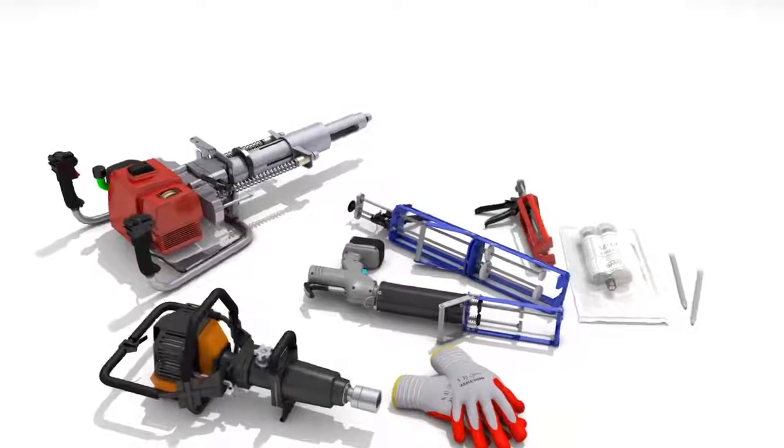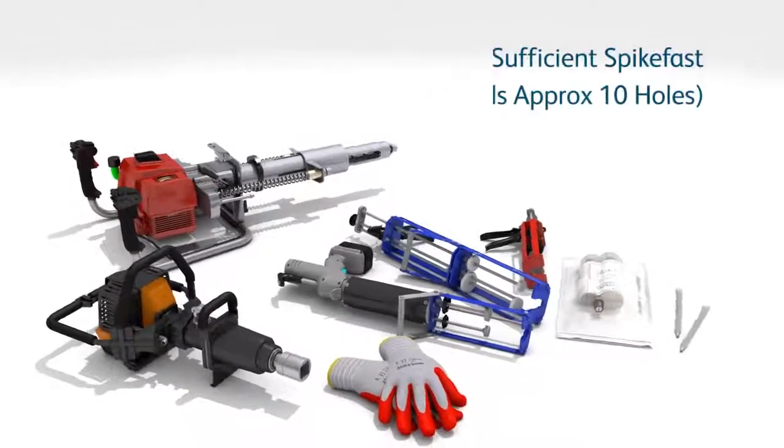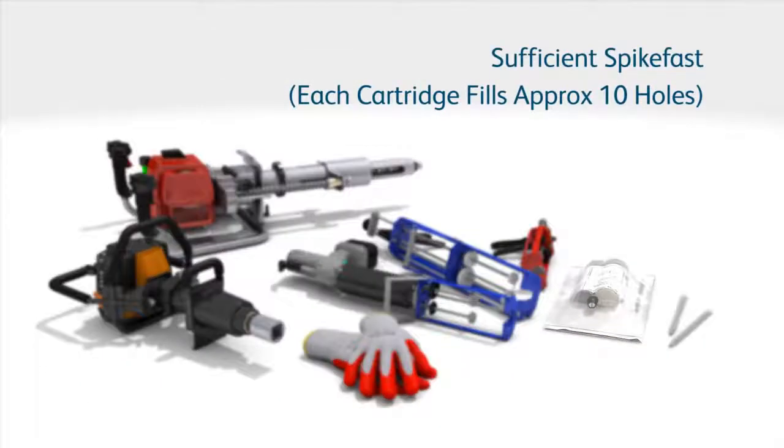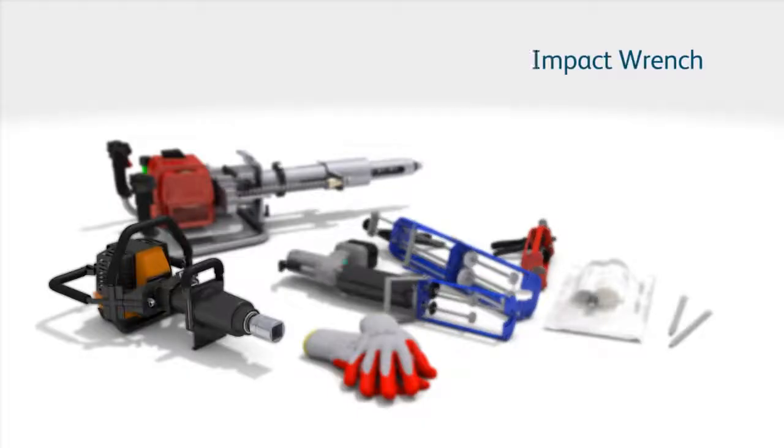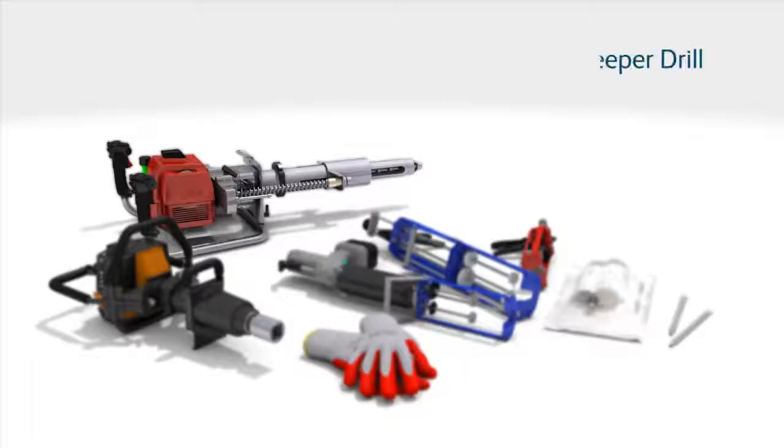To perform this task, you will need sufficient ET75 or ES50 SpikeFast. Each 450 milliliter cartridge fills approximately 10 holes. You'll also need a SpikeFast applicator gun, an impact wrench, sleeper drill, safety gloves, and spare mixing tubes.